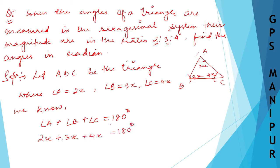9x is equal to 180 degrees, and x is equal to 180 divided by 9, which is 20 degrees. So we got x as 20 degrees.